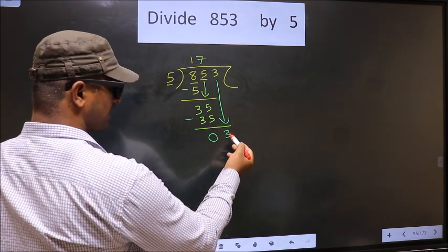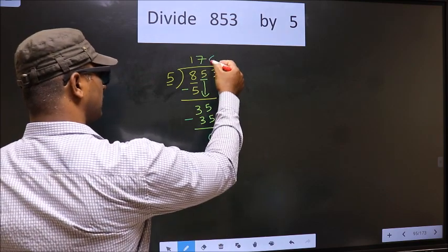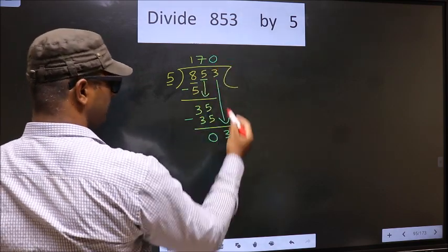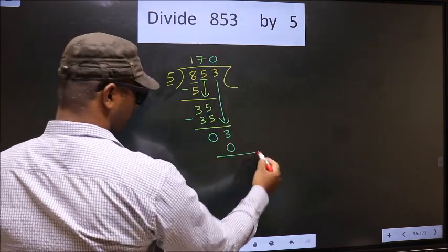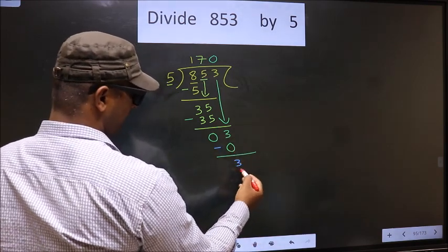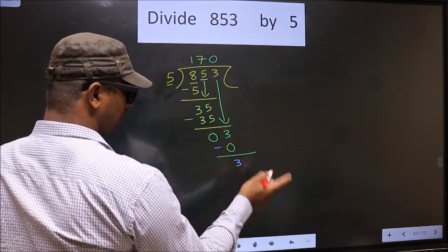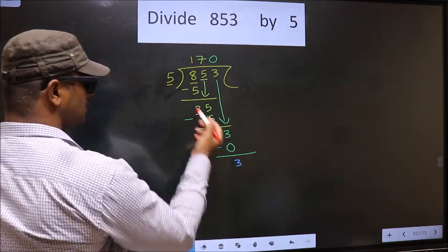So 5 into 0 is 0. Now you subtract: 3 minus 0 is 3. Over here we did not bring any number down, and 3 is smaller than 5.